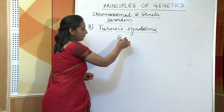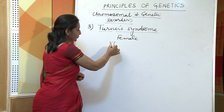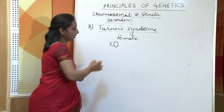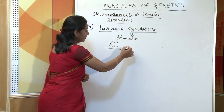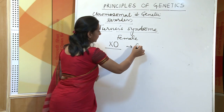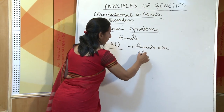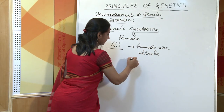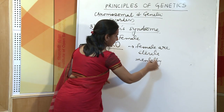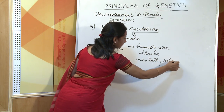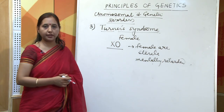The next syndrome is Turner syndrome. This occurs in females wherein there is loss of one X chromosome and the genotype becomes XO instead of XX. Such females are sterile and they are mentally retarded as well.